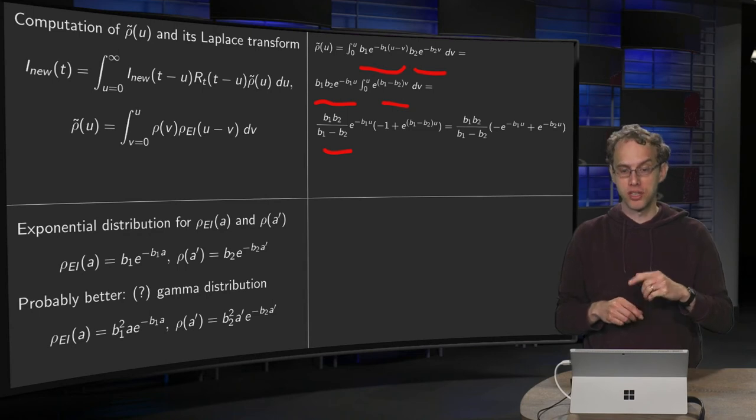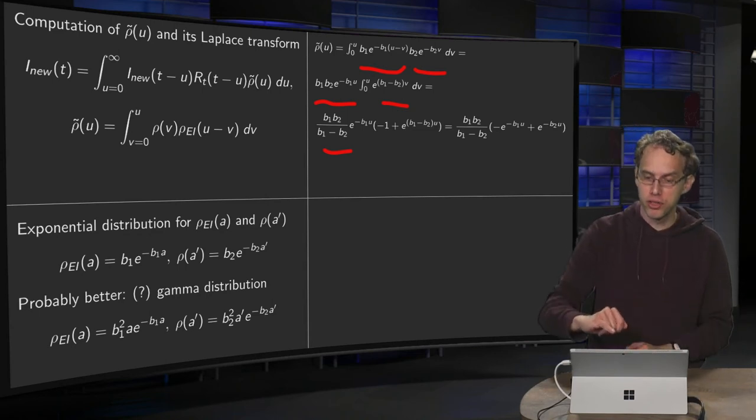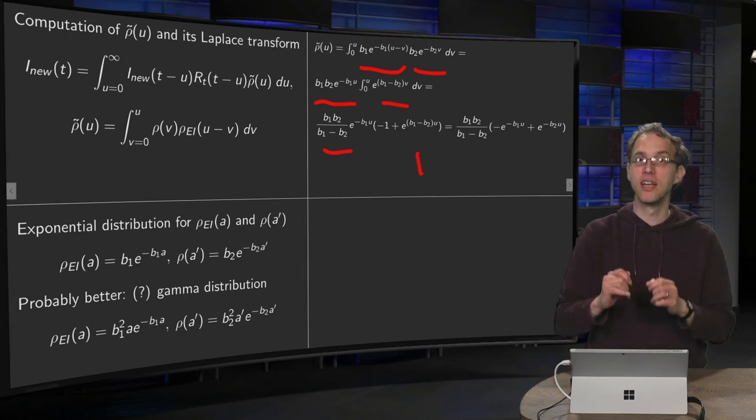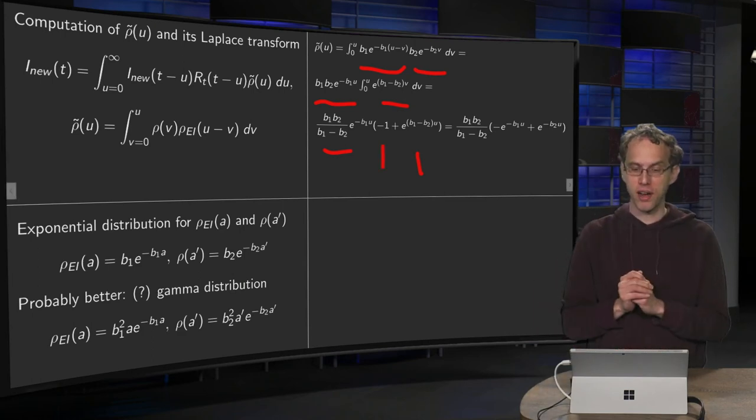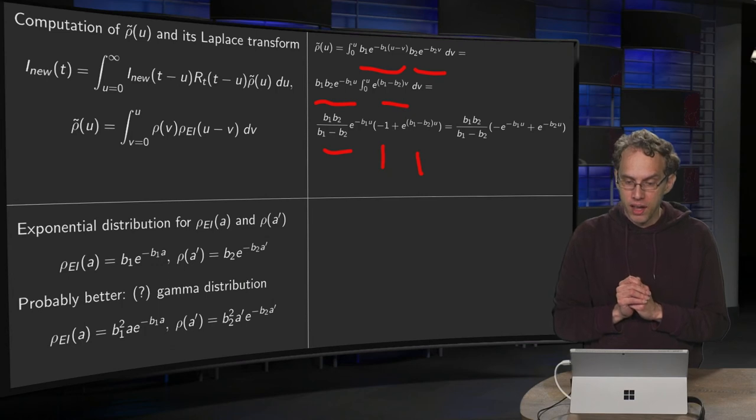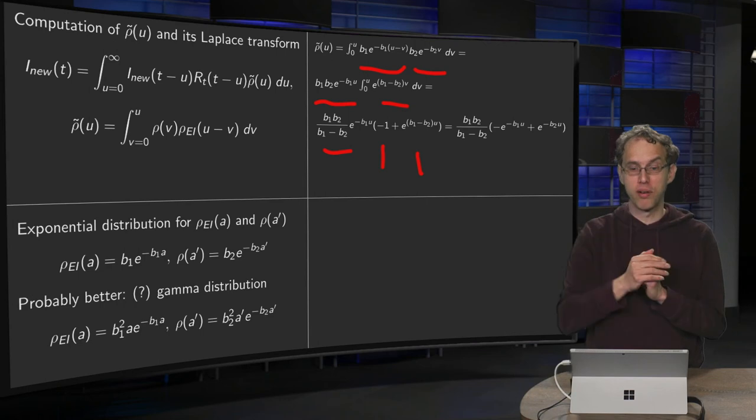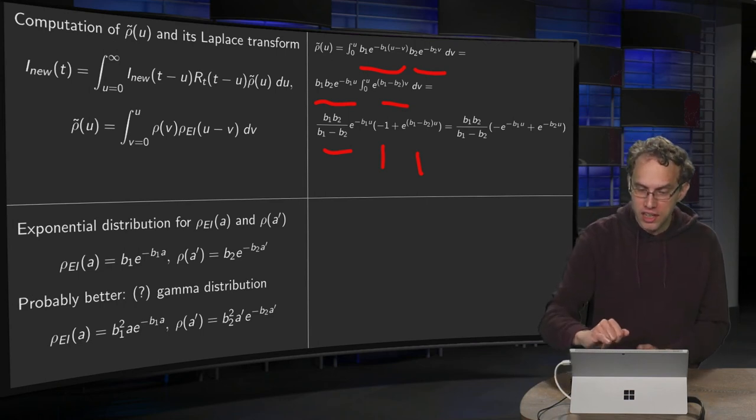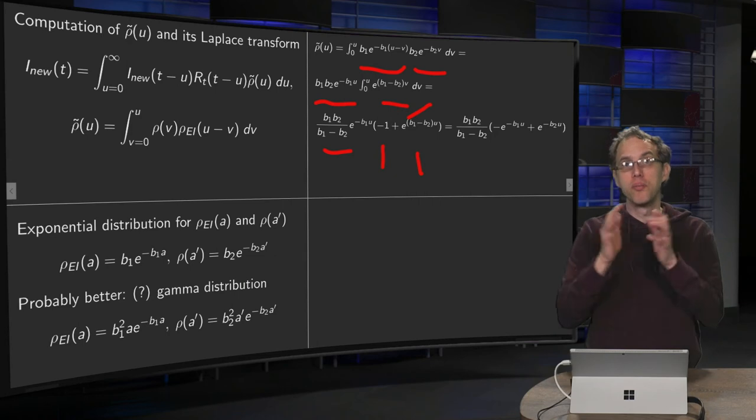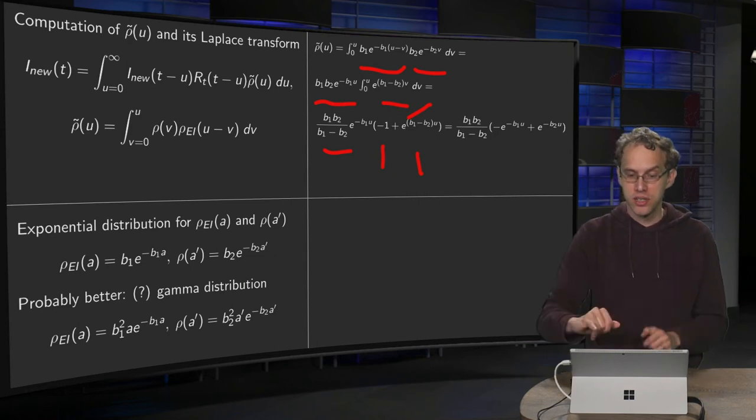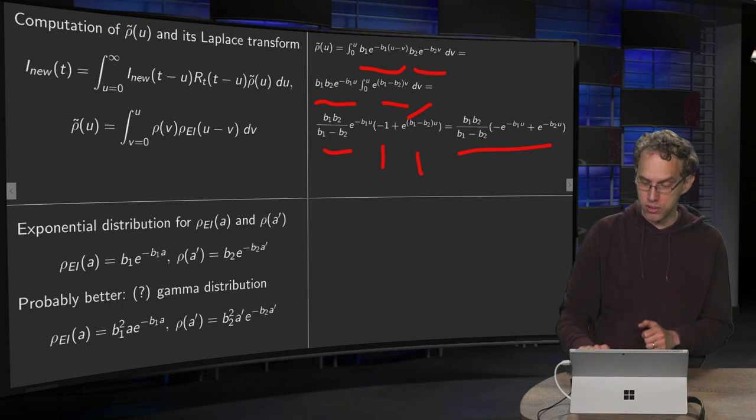And in the boundaries, upper boundary gives you v equals u, so here you have your upper boundary. And your lower boundary gives you 0, so it gives you e to the power 0 equals 1, it's a lower boundary, so you get a minus 1 over there. And then we can simplify a bit by taking e to the power minus b1 u in, because that nicely cancels out this factor over here. It becomes a bit more symmetric. So here you have your ρ tilde of your convolution.